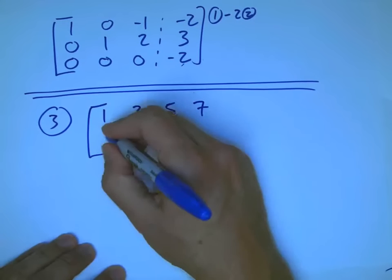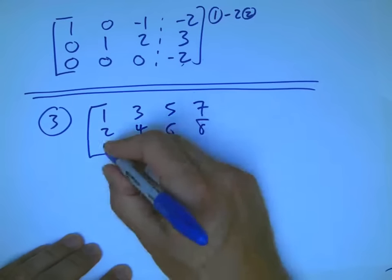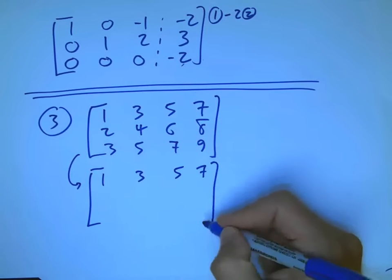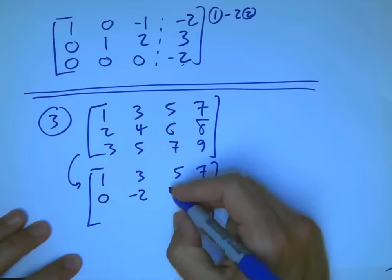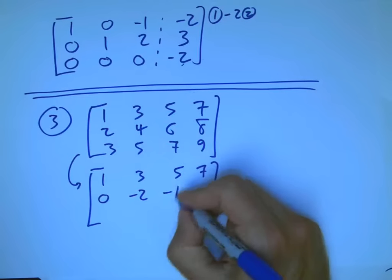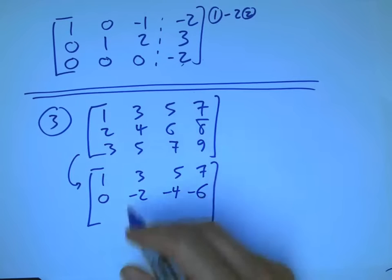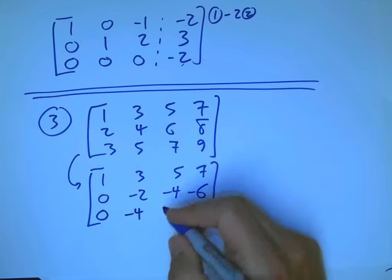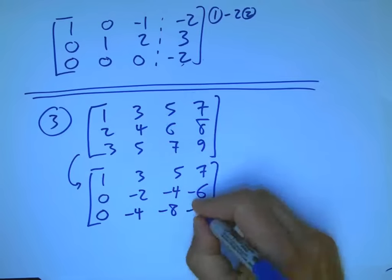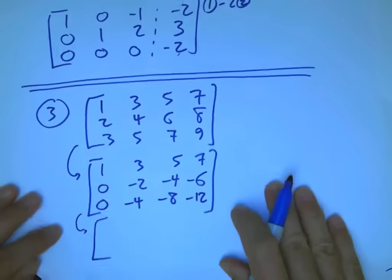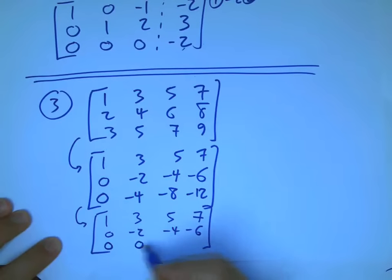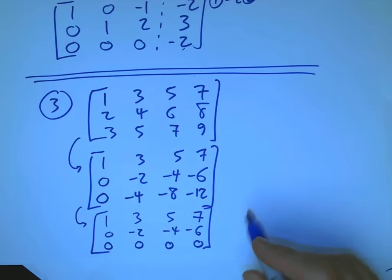One more example. Let's go to town here. Subtract twice the first row, so I get zero. Four minus six is minus two. Six minus ten is minus four. Eight minus fourteen is minus six. Subtract three times the first row from this bottom row. That's zero. Five minus nine is minus four. Seven minus fifteen is minus eight. And nine minus twenty-one is minus twelve. You might notice something already. I just subtract twice this row from the bottom row, and it all cancels out.